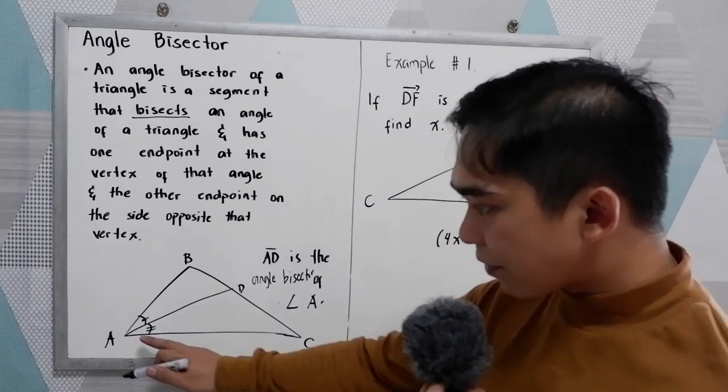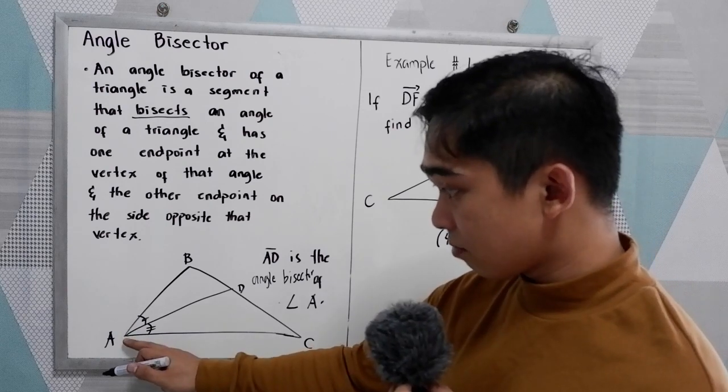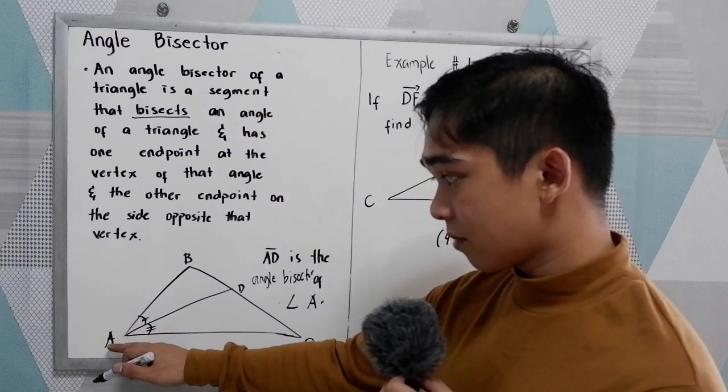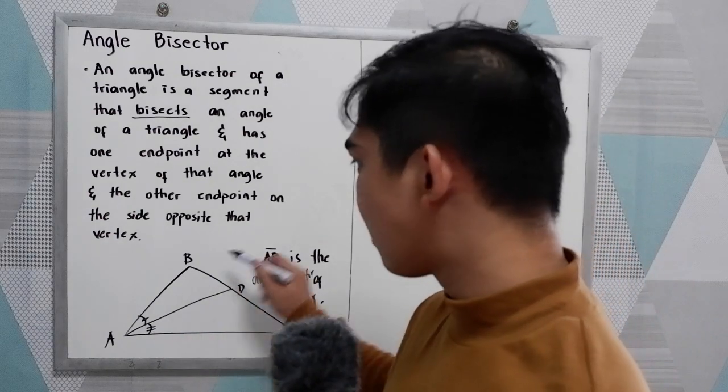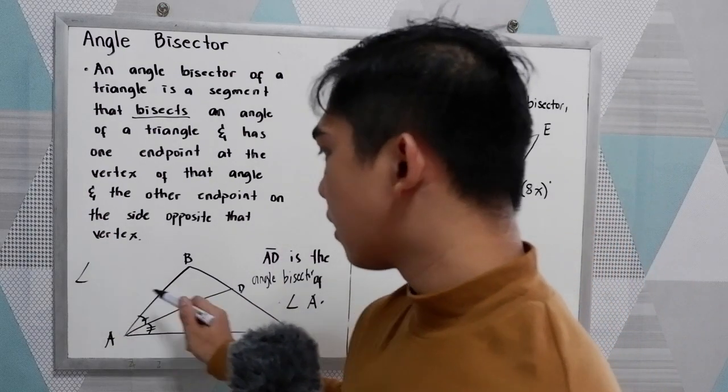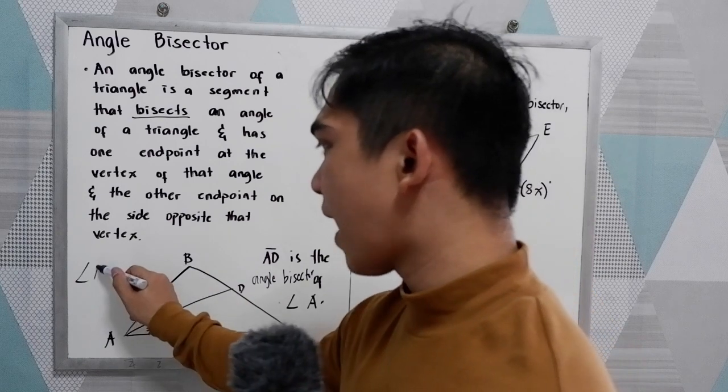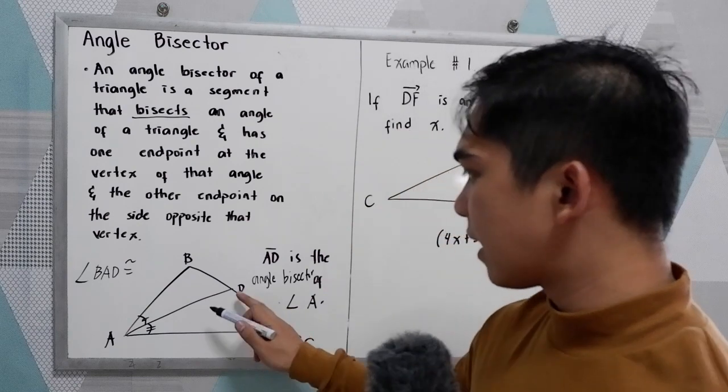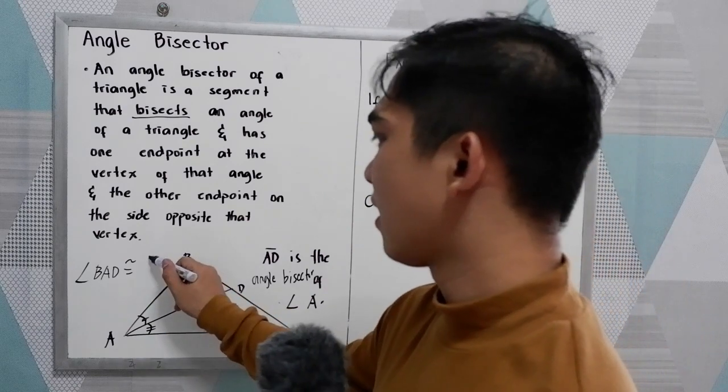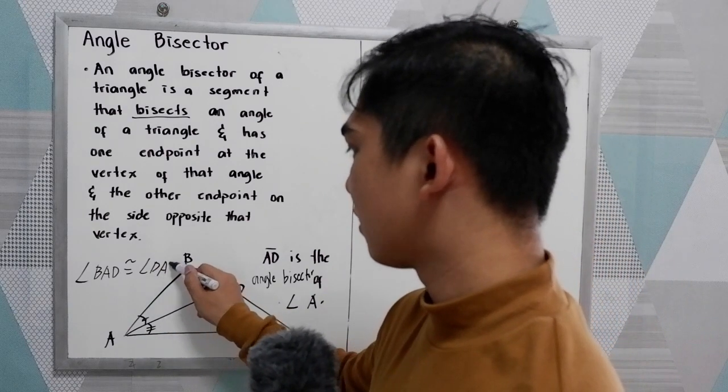So we have angle A, then AD bisects angle A. That means we can conclude that angle BAD is congruent to angle DAC.